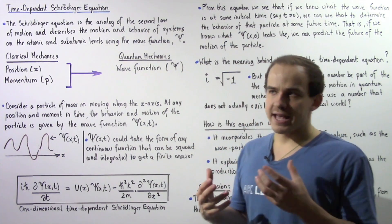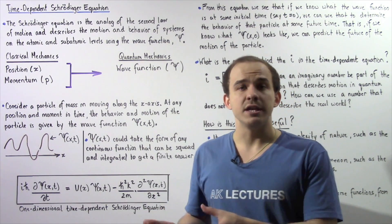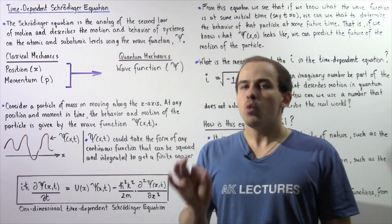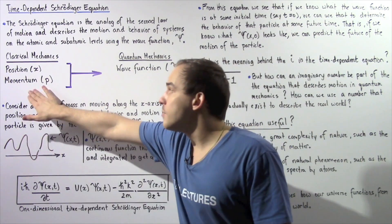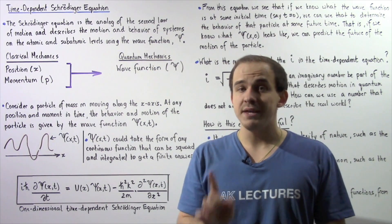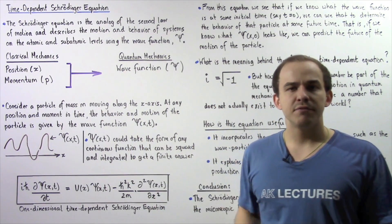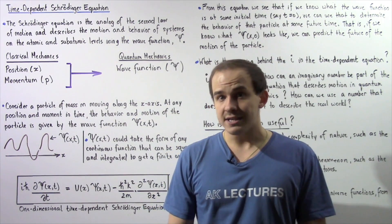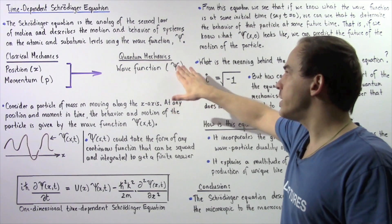Now, in quantum mechanics, things aren't so simple. In quantum mechanics, we have the wave-particle duality of nature. And according to Heisenberg's uncertainty principle, we cannot precisely know the position of our object as well as the momentum of that object at the same moment in time. So that means in quantum mechanics, we cannot actually use these quantities to describe the motion of our object. And these quantities are basically replaced by a quantity we call the wave function, given by the Greek symbol psi.